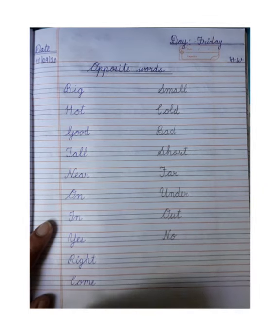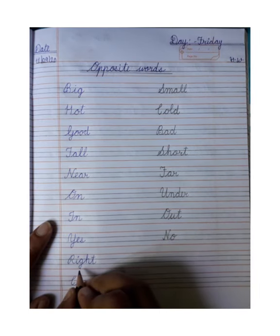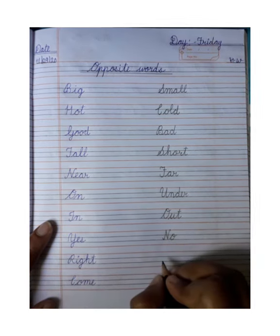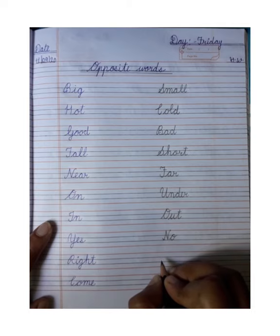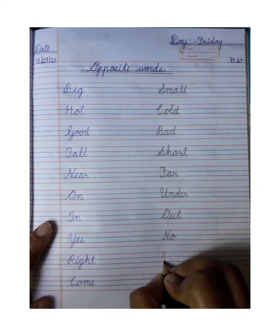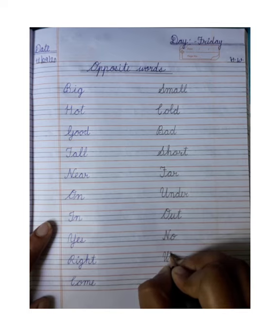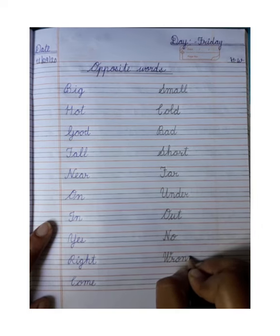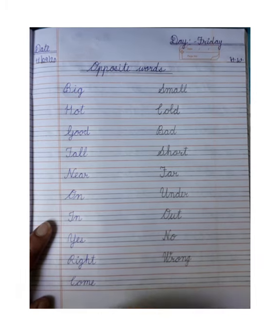Next, right — right yani sahi. Wrong yani galat. So what is the opposite of right? Wrong. W-R-O-N-G, wrong.